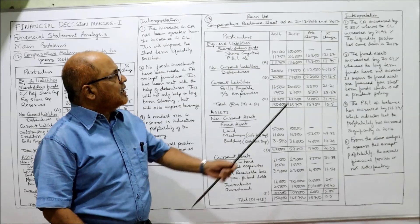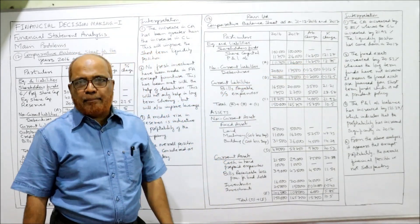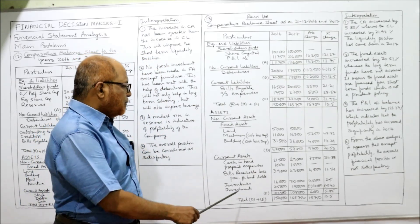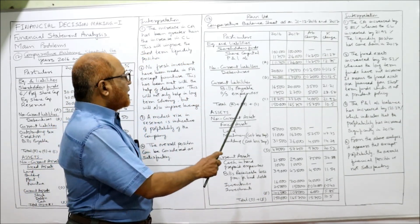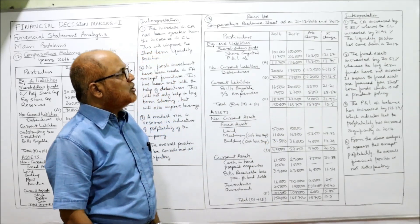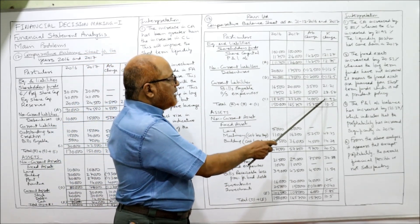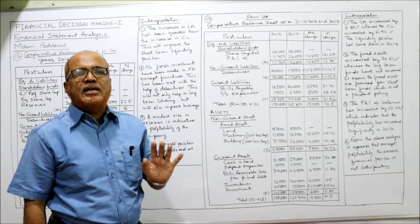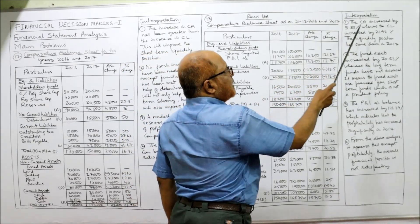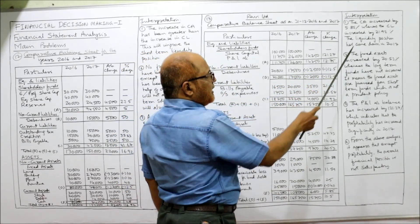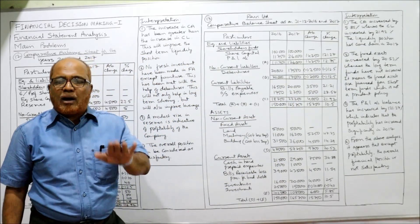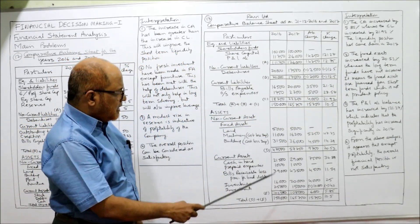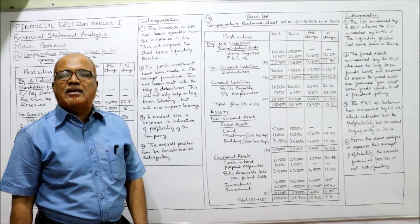For the interpretation of this balance sheet, first we compare current assets with current liabilities. Current assets increased by only 5.85%, while current liabilities increased by 21.92%. This means the short-term liquidity position has deteriorated during 2017 — current assets increased at a much lower rate than current liabilities. The liquidity position has come down in the current year 2017. Secondly, fixed assets increased by 20.53%.